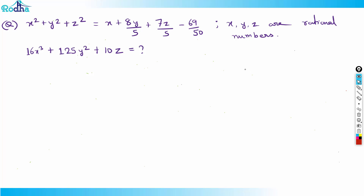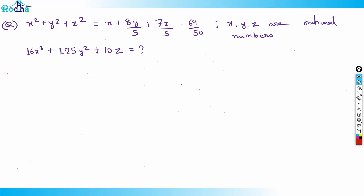Hi guys, let's look at this question — a very good question and a very good concept from algebra, used in multiple ways. The question says x² + y² + z² = x + 8y/5 + 7z/5 − 6/50, where x, y, z are rational numbers. You need to find a certain value.